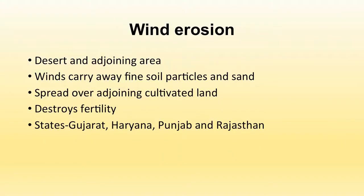Wind erosion takes place in desert areas or areas adjoining deserts. Wind blows at a very fast pace with high velocity, carrying away fine soil particles and spreading them over adjoining areas. This destroys the fertility of those adjoining areas where the sand particles are deposited. Wind erosion takes place mainly in the states of Gujarat, Haryana, Punjab, and Rajasthan of India.